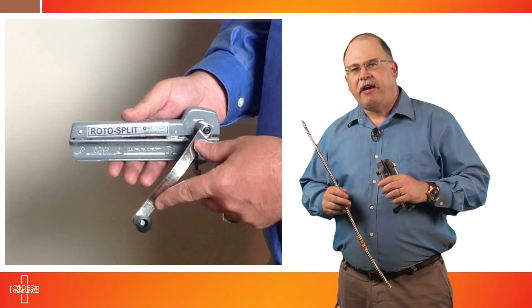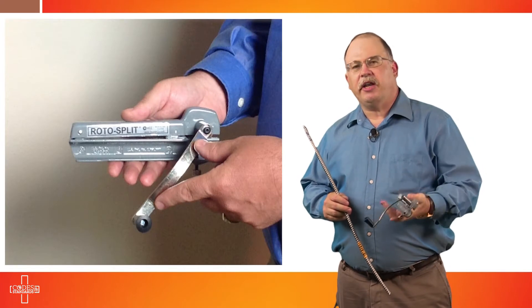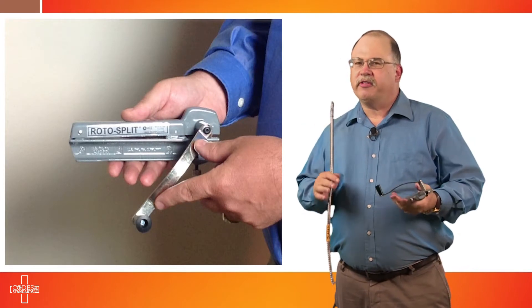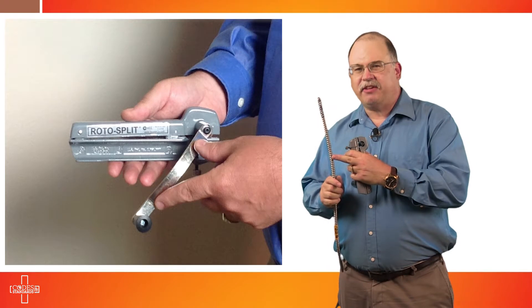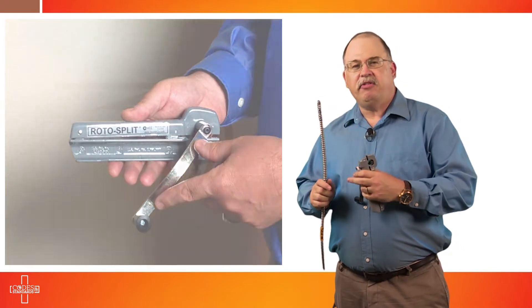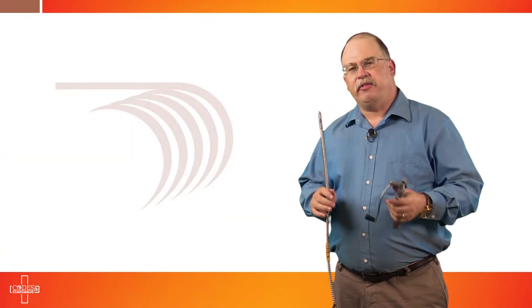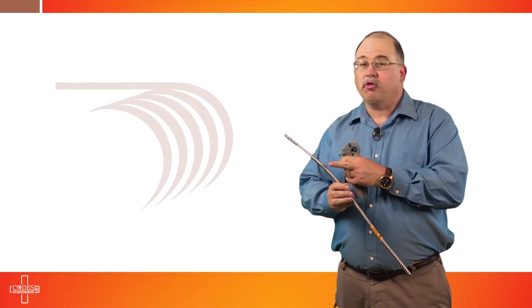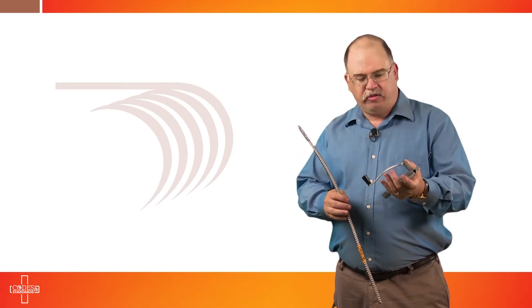When cutting Type MC cable or Type AC cable, it's important to select the proper tool for the job. We recommend Rotosplit cutting tools. These tools are designed to cut through the metallic sheathing and not damage the interior conductors, and they're very simple to use. There are other methods to cut the outside metallic sheathing under controlled supervision like with hacksaws or other rotary tools. We just happen to recommend this one because we've used it quite a bit and it's a reliable cutting tool.